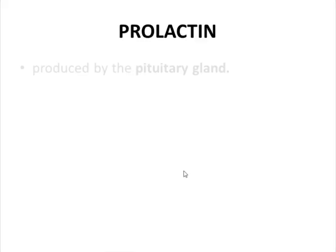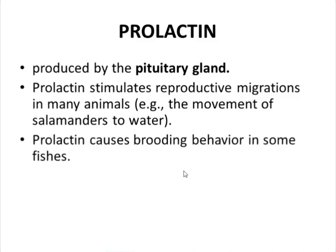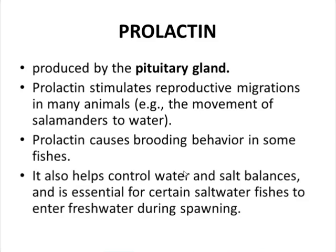Another example is prolactin, produced by the pituitary gland. In some animals it is responsible for reproductive migration, such as in salamanders. In some fishes it causes brooding behavior and helps control water and salt balance, and is essential for certain saltwater fishes to enter fresh water during spawning. So prolactin has different functions in different animals.